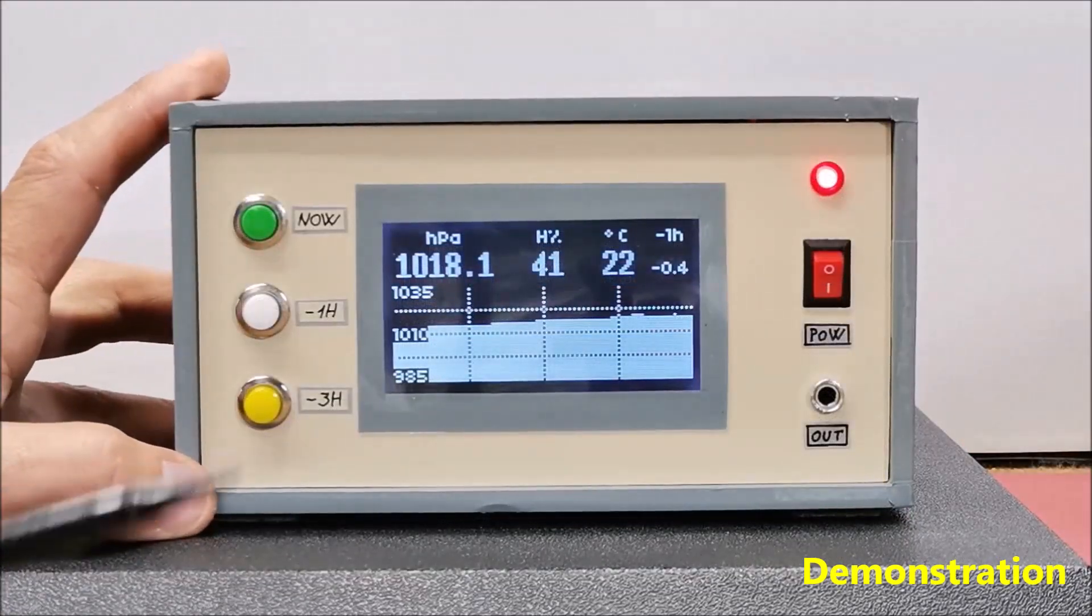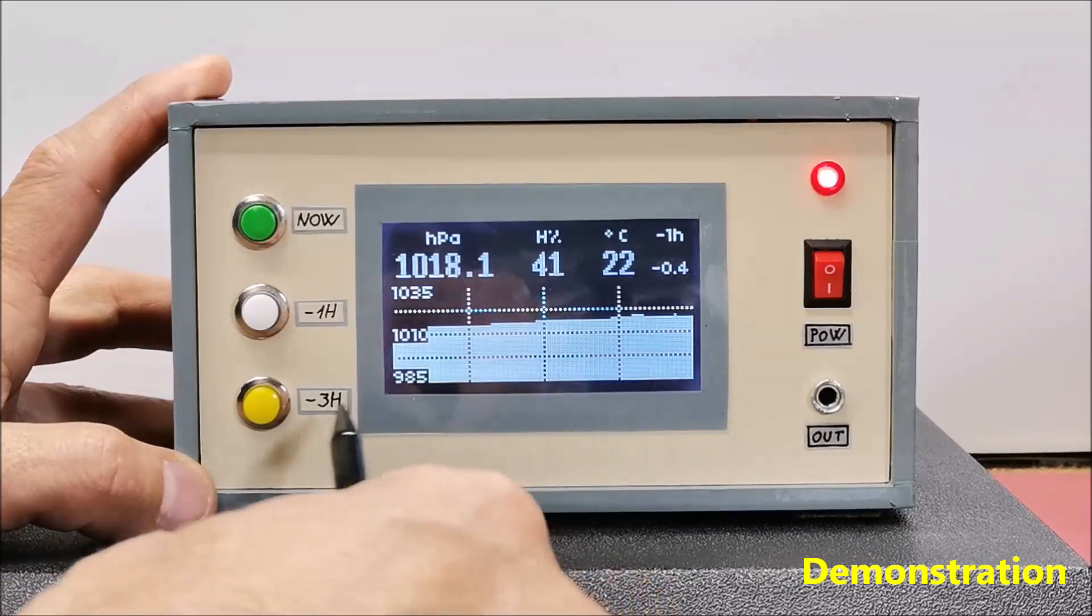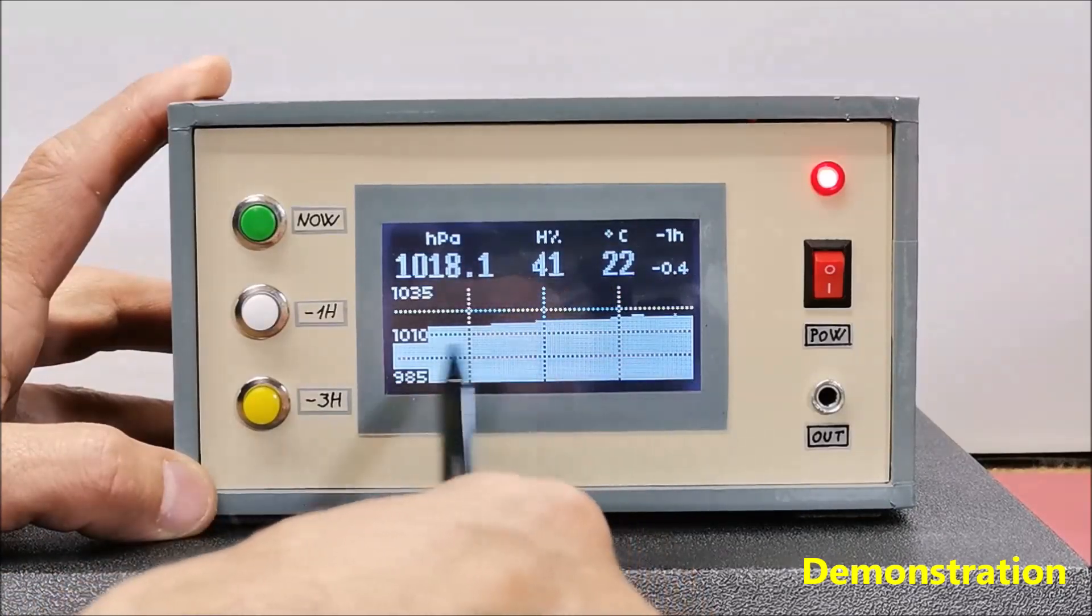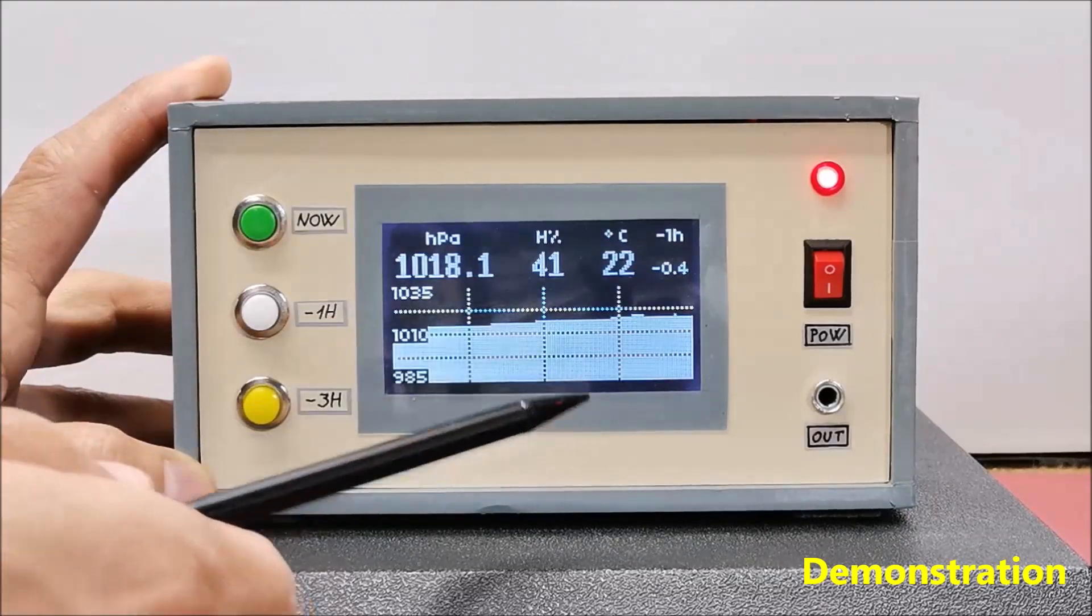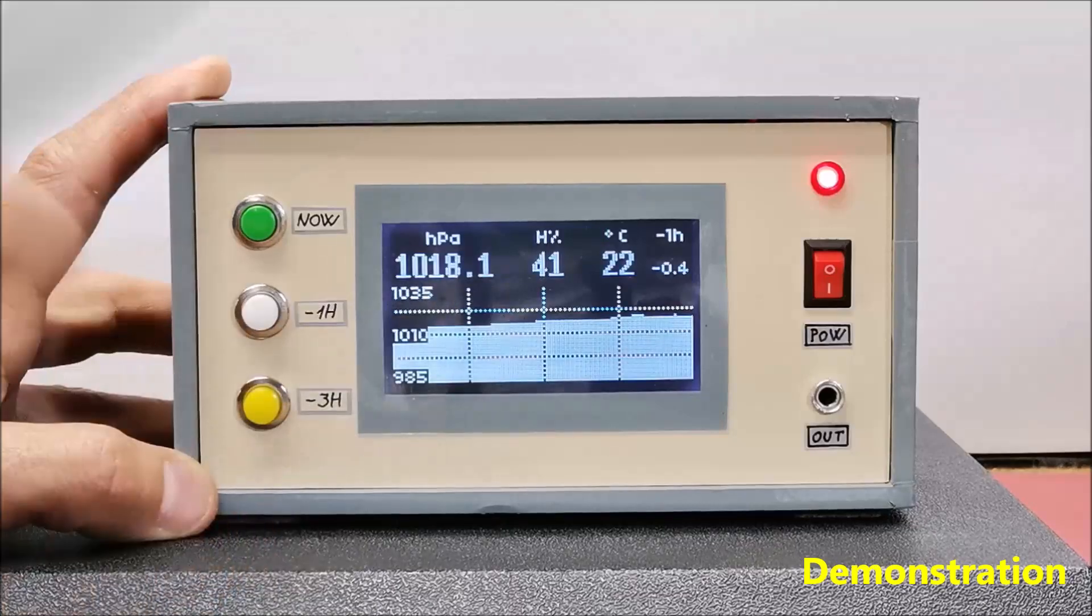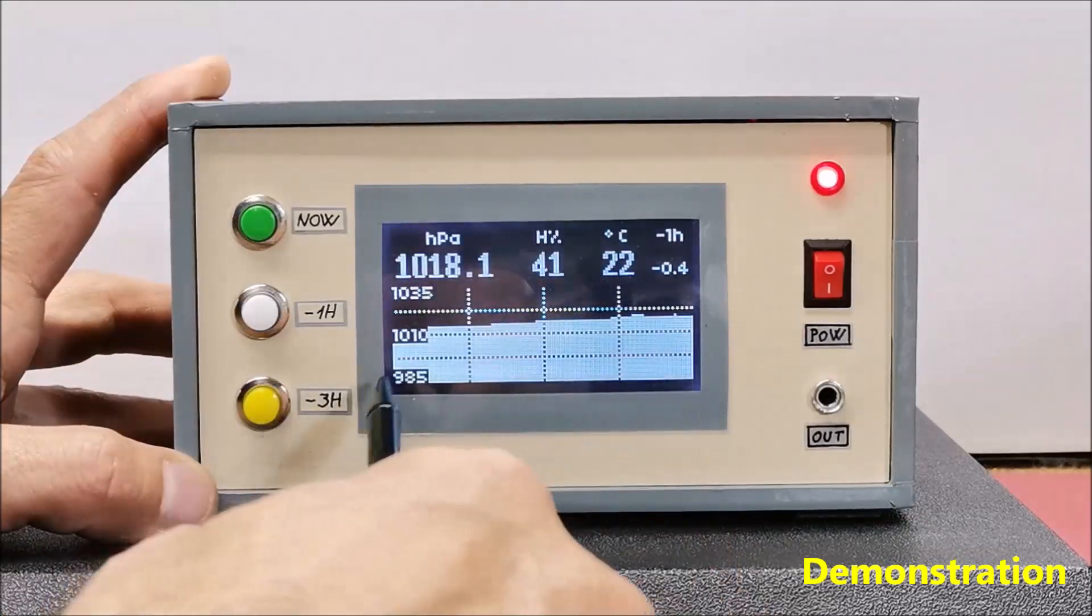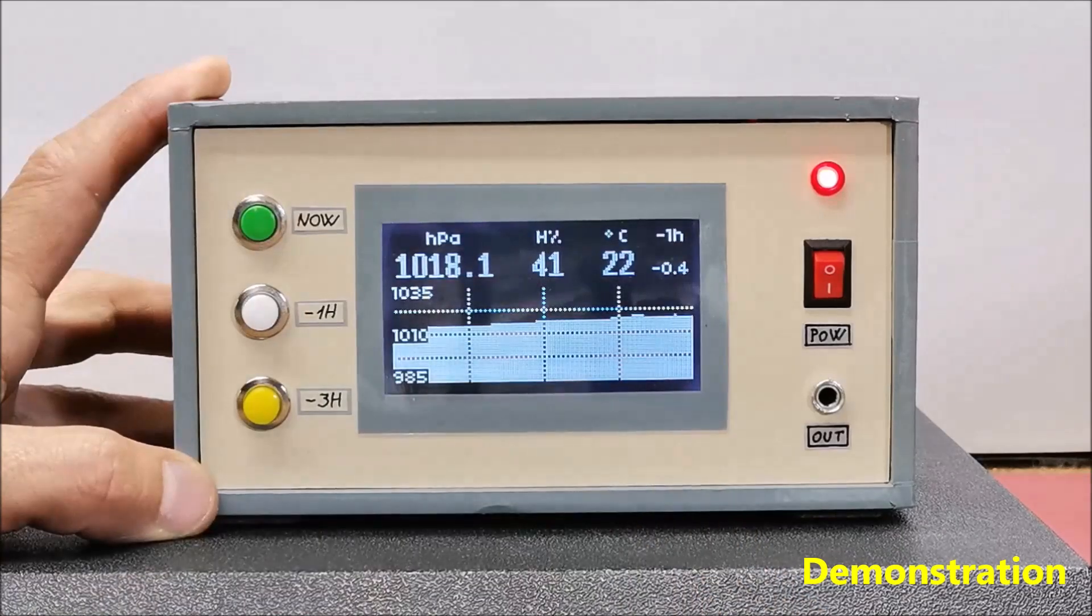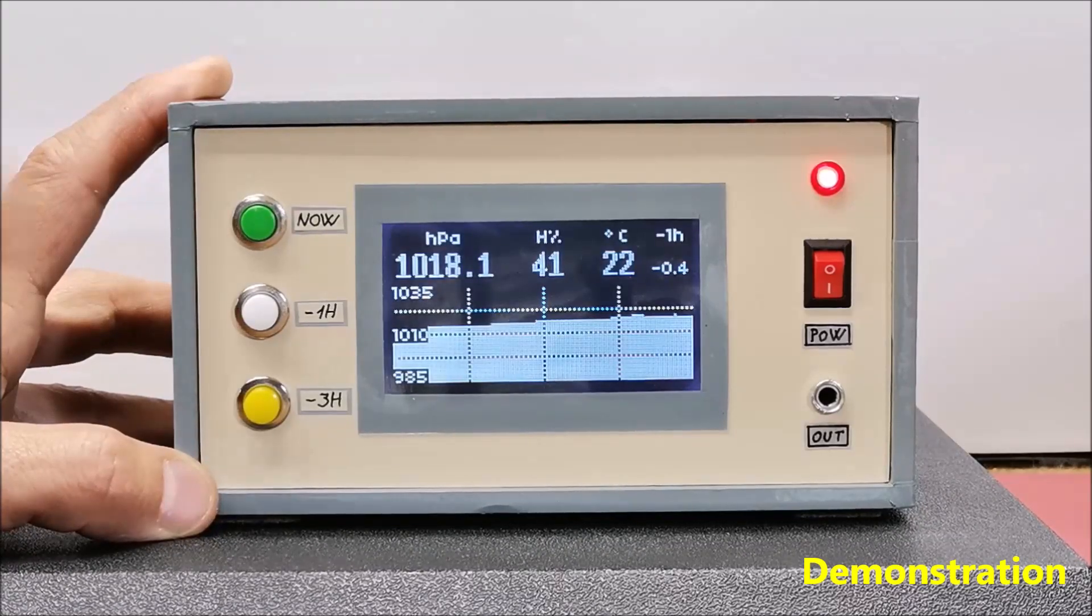Of course the most important part here is the graph that shows the movement of atmospheric pressure over time. The entire graph is drawn with 128 vertical bars and the time covered by these bars is exactly 24 hours.